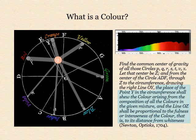Newton found that the direction of imbalance in the circle — the common centre of gravity, towards Y — determines the hue of the light, such as red or green, or in this case orange. And the amount of imbalance, the distance OZ, is proportional to, in Newton's terms, the fullness or intenseness of the colour, that is, to its distance from whiteness. We now call this purity of colour of a light saturation.